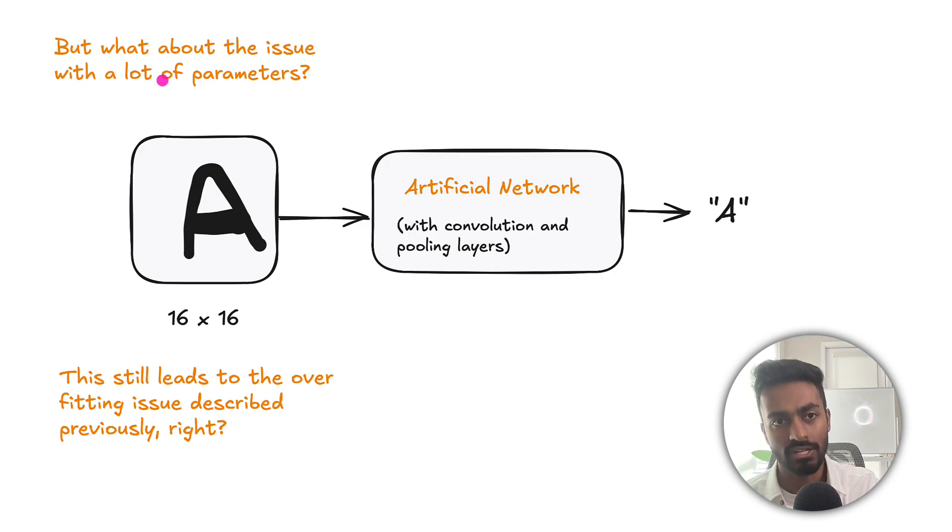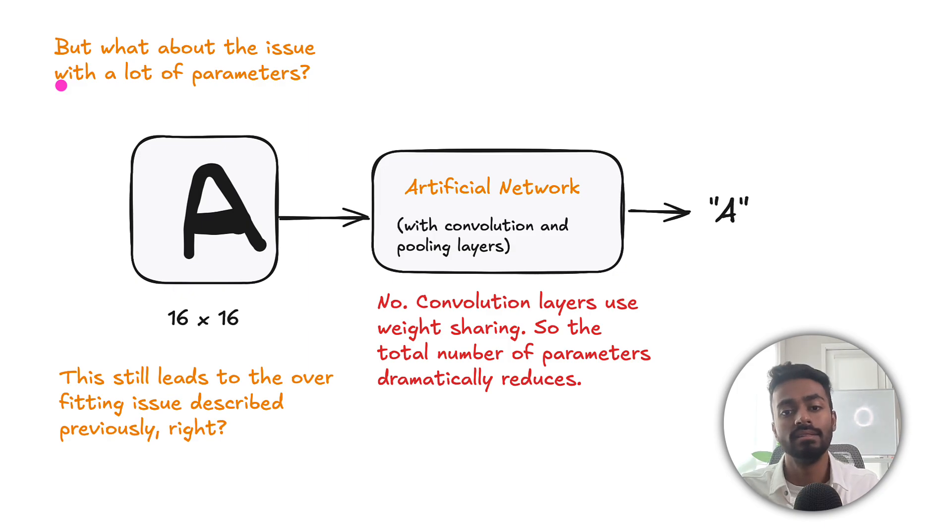But what about the issue where we have a lot of parameters like we saw in the original feed forward case, would this still lead to memorization and overfitting? Well, in this case, convolution layers use something called weight sharing. So we have different convolution filters that will be sliding the same filter, which is the same exact set of weights across the entire image. So the weights are going to be shared, essentially. And this significantly reduces the number of parameters that are used during training.